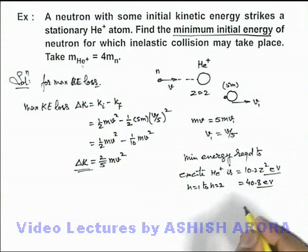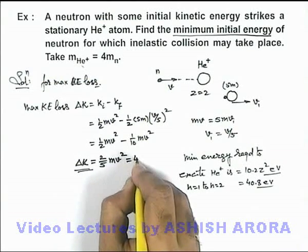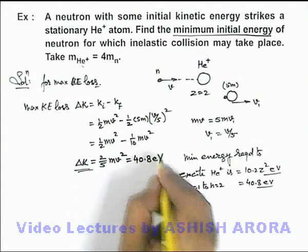This is the energy in units of electron volts. So in this situation for minimum energy here this 2.5 mv squared should be equal to 40.8 electron volt energy.